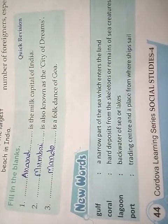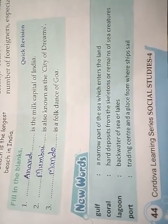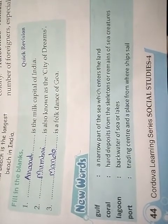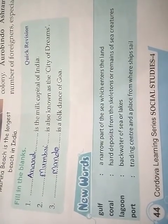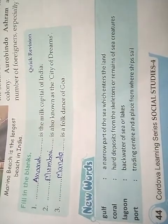Before we start the lesson, let's learn the new words and hard words. First, Gulf: a narrow part of the sea which enters the land. Coral: hard deposits from the skeletons or remains of sea creatures. Lagoon: backwater of sea or lakes. Port: a trading center and a place from where ships sail.